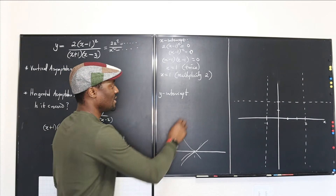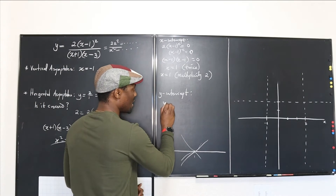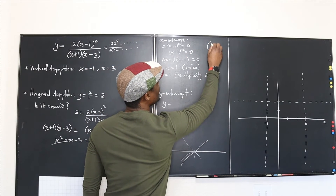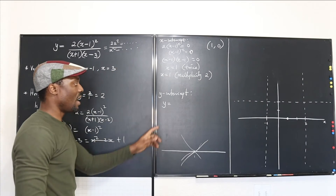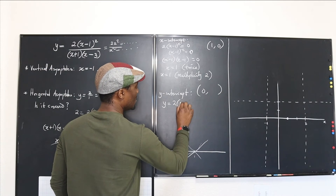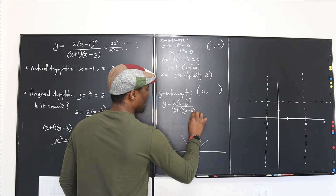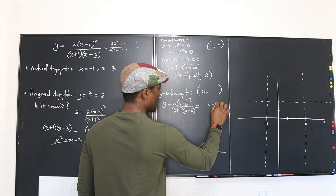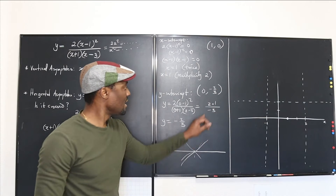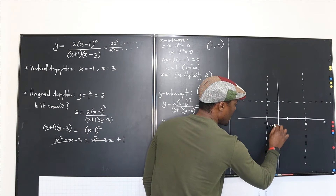So the x-intercept is the point (1, 0). For the y-intercept, we plug in x equals 0: y equals 2 times (0 minus 1) squared over (0 plus 1)(0 minus 3), which gives 2 times 1 over negative 3, so y equals negative 2 thirds. The y-intercept is at the point (0, negative 2 over 3), which is just below the x-axis.